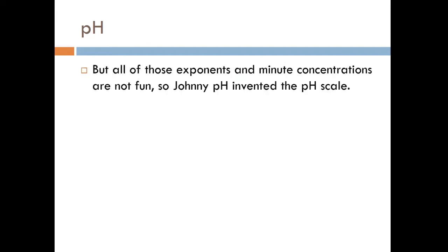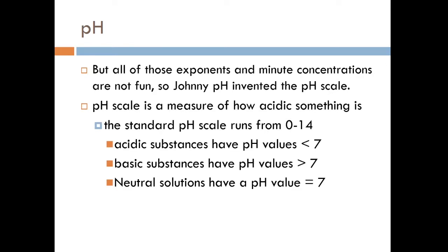So nobody likes doing those equations, though, because they are very small and minute and dilute concentrations. So Johnny PH, actual name, invented the pH scale. And you may be familiar with that, which you'll see in the next slide. It's a measure of how acidic or how basic something is. Standard scale runs 0 to 14, but you can go a little bit over and a little bit under in certain cases. But where 99% of solutions, the pH is going to run from 0 to 14. Acidic substances have a pH value below 7, and basic would be a pH value above 7, and neutral solutions of a pH value equal to 7.